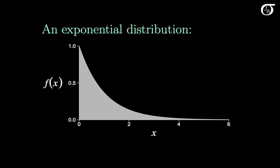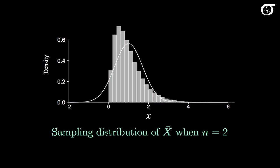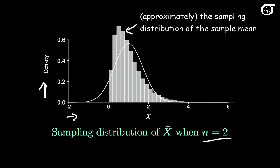Here's an exponential distribution, which is most definitely not normal. What I'm going to do is draw a sample of two observations, so n is 2. I'm going to draw two independent values from this distribution and get the mean, and do that again and again a million times, getting a million sample means where n is equal to 2. The grey histogram here is a histogram of those million sample means, which is approximately the sampling distribution of X bar in this scenario.